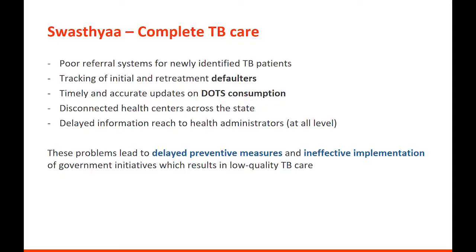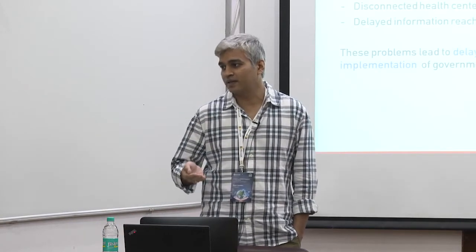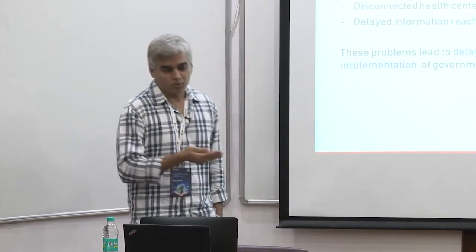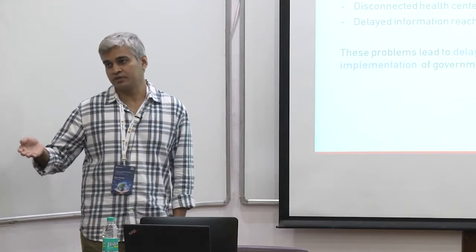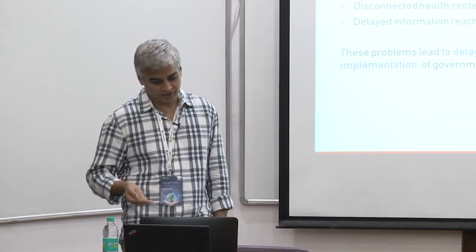The second project is Swasthiv, a complete tuberculosis care ecosystem. The challenges in the TB ecosystem in India include, first, a poor referral system — if I am a citizen and a prospective TB patient, there is a process where a health worker refers me to the health system as a potential tuberculosis patient.